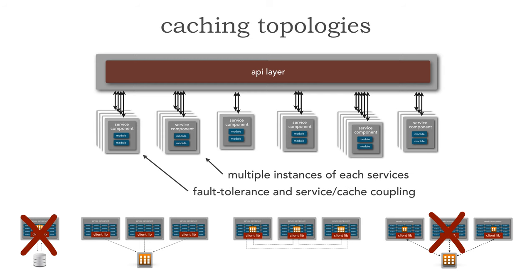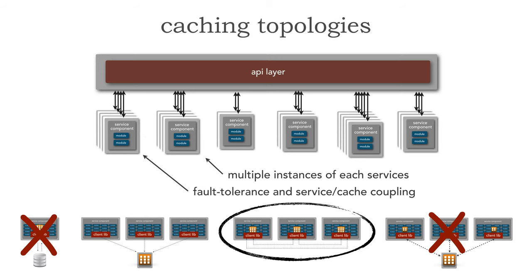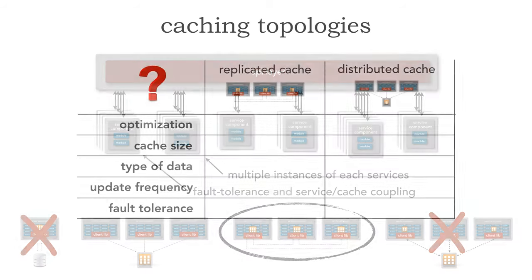Looking at other aspects of microservices — fault tolerance is one reason we have multiple instances, and there's also that service cache coupling point. For this reason, replicated caching is generally the best approach for microservices, but with the caveat that replicated caching falls apart in two areas: high update rates and too much data. Both distributed and replicated are good options within microservices, but let's look at which is generally better.